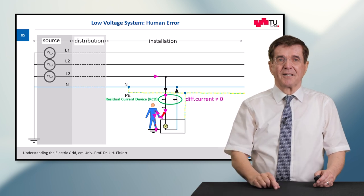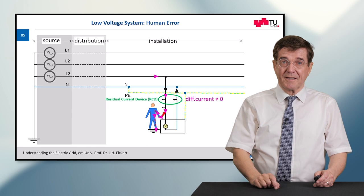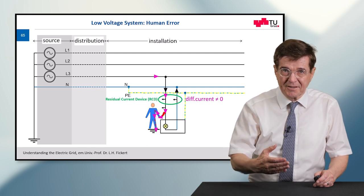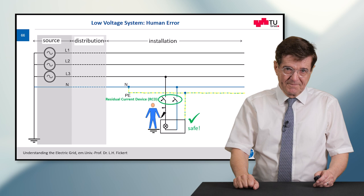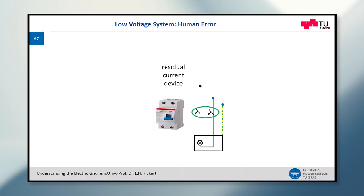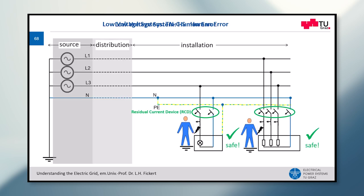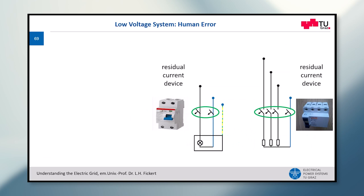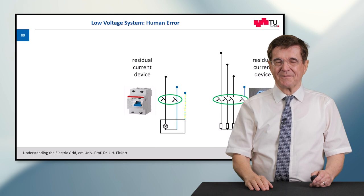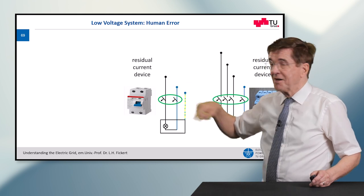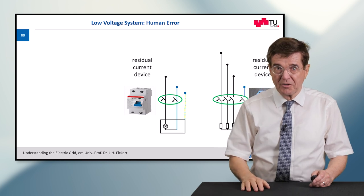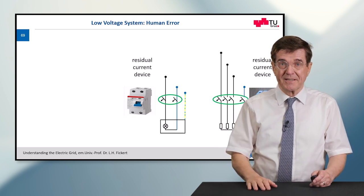Now suppose a person touches the live part — there is an additional current through their body, which in many cases is dangerous and might kill that person. We have an additional current shown in violet, and now the differential current is no longer zero. This trips the circuit breaker immediately, and the person is in a safe condition. You may know these from your home installation. The residual current device is a single-phase additional protection device — it looks like this. If it is three-phase, for example in a factory, it has a different appearance with four terminals for L1, L2, L3 and the neutral wire. Of course, you never do this as a private person — always refer to experts.